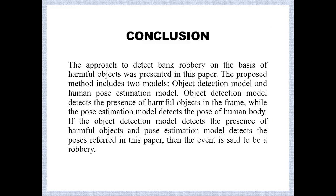Our approach to detecting a bank robbery is straightforward: we detect features like helmet and gun using object detection, and use human pose detection for hands-up or on-knees scenarios. We apply a threshold value using our algorithm, and if it is crossed, an alert is sent — currently in the form of an email.